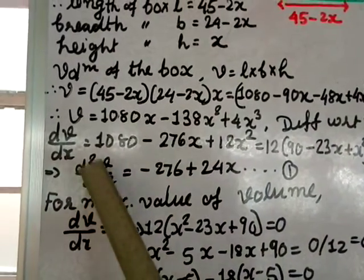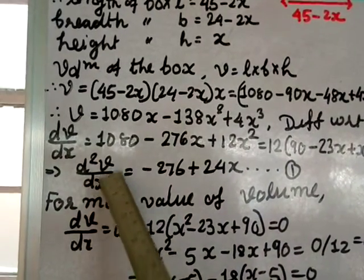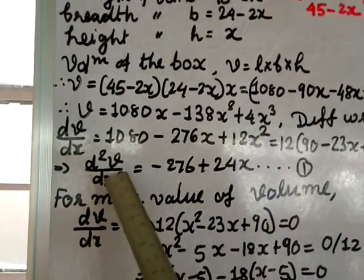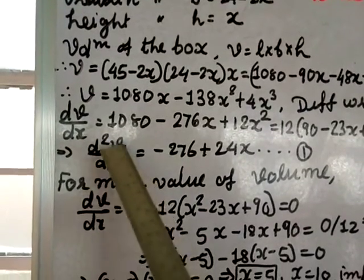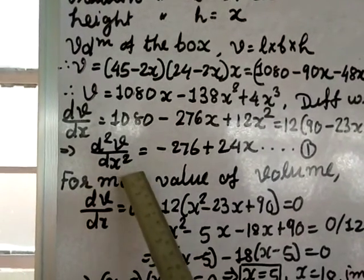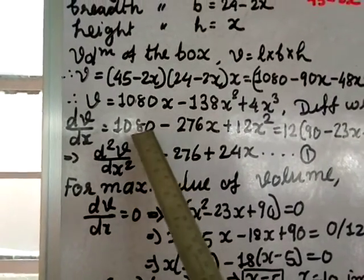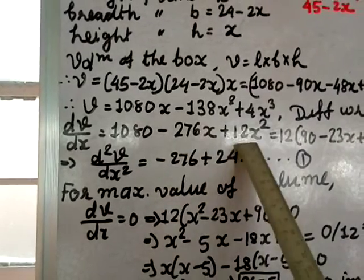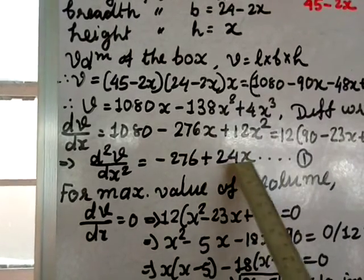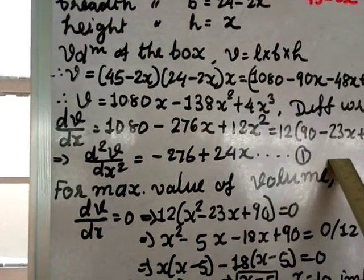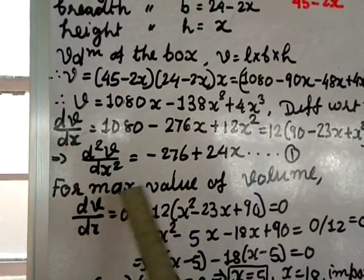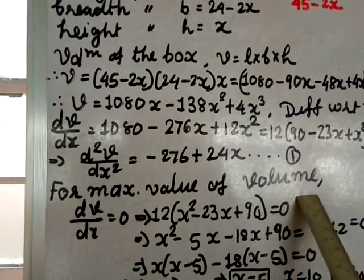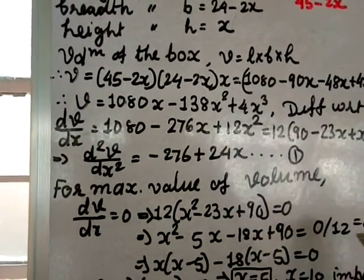For the second derivative, d²V/dx² = minus 276 plus 24x. This is equation number 1. For maximum volume, we set the first derivative equal to zero.